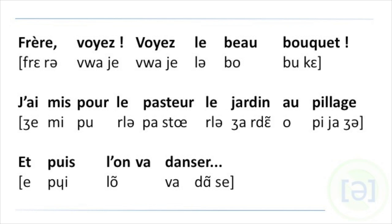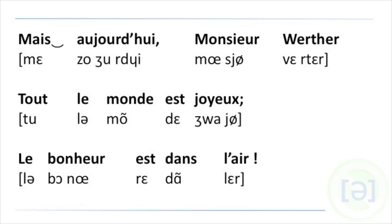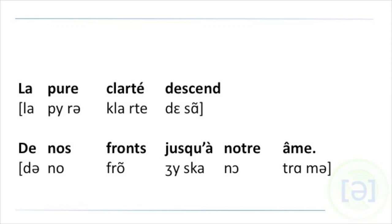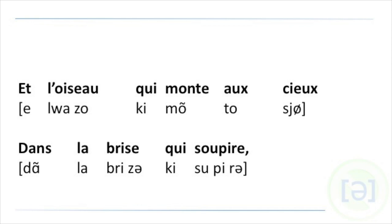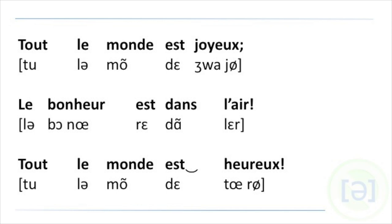Frère, voyez, voyez le beau bouquet. J'ai mis pour le pasteur le jardin au pillage, et puis on va danser. Frère, voyez. Pour le premier menuet, c'est sur vous que je compte. Oh, le sombre visage. Mais aujourd'hui, Monsieur Werther, tout le monde est joyeux, le bonheur est dans l'air. Et l'oiseau qui monte aux cieux dans la brise qui soupire est revenu pour nous dire que Dieu permet d'être heureux. Tout le monde est joyeux, le bonheur est dans l'air. Tout le monde est heureux.